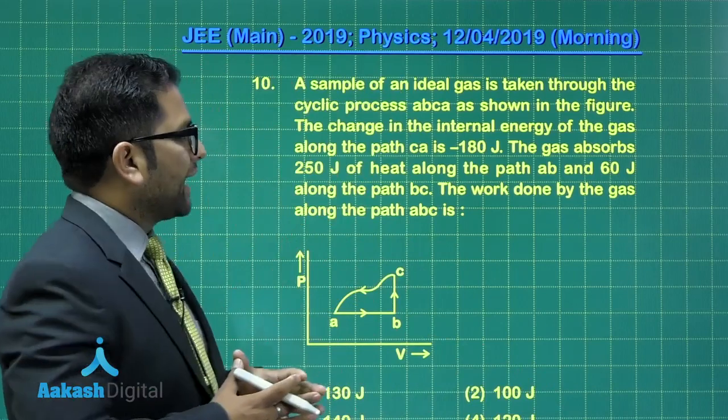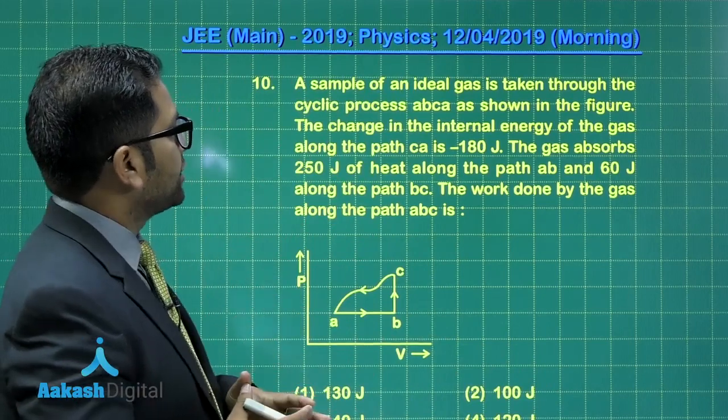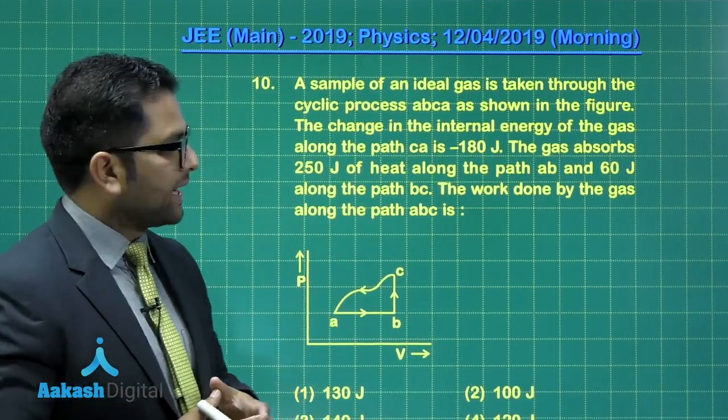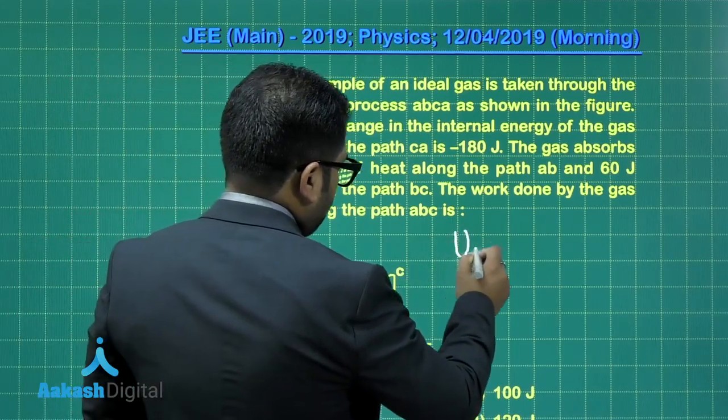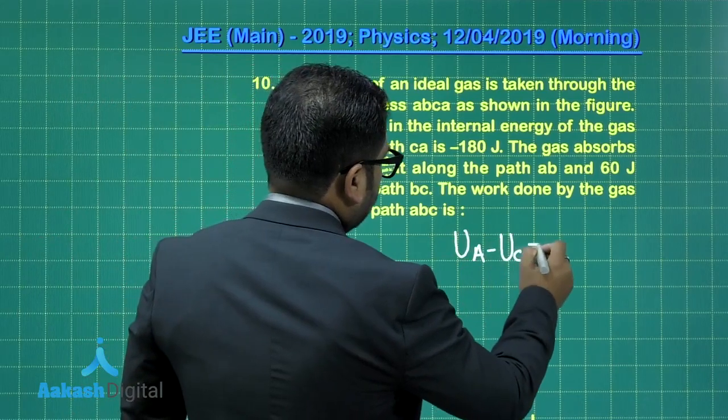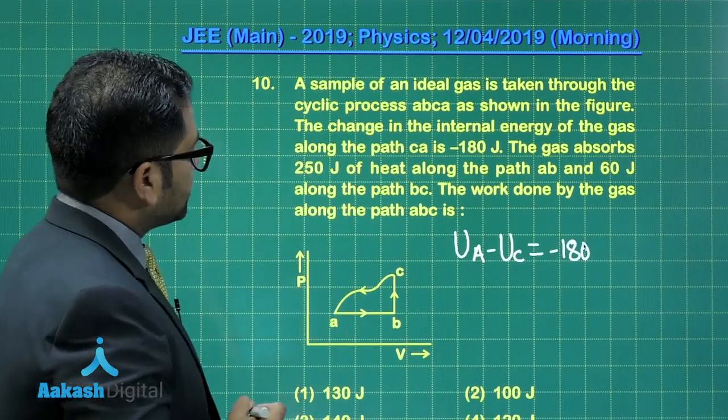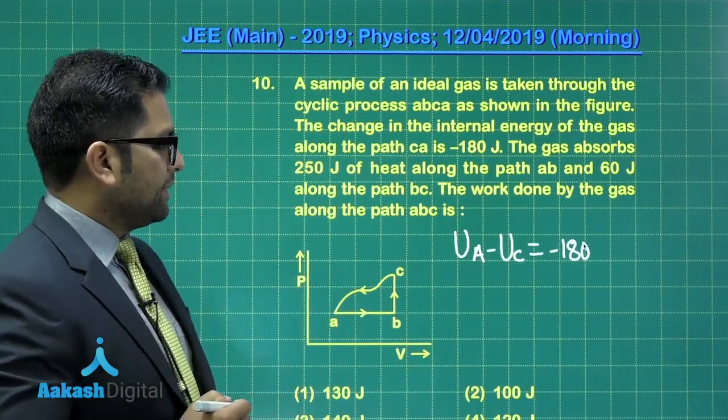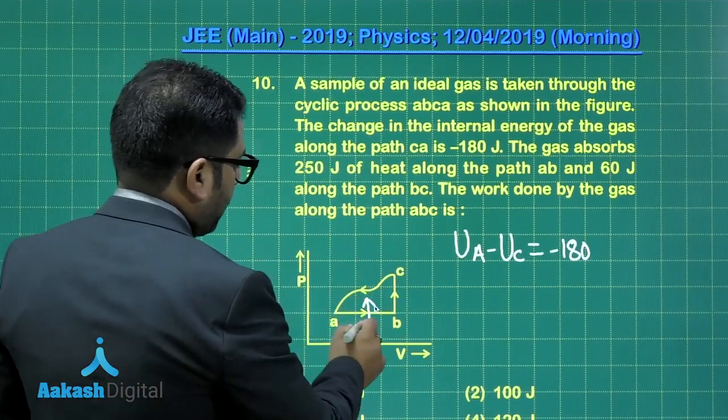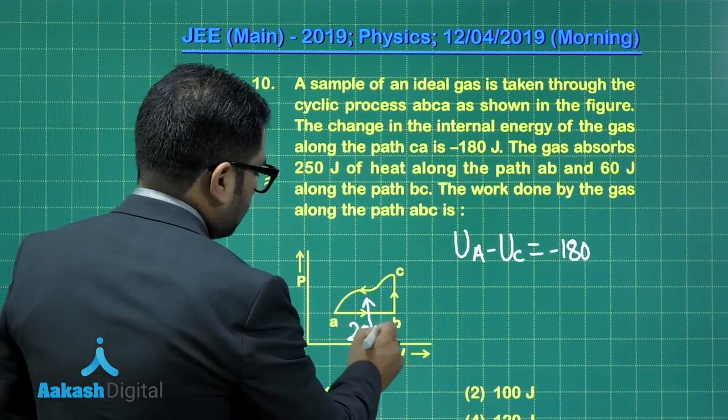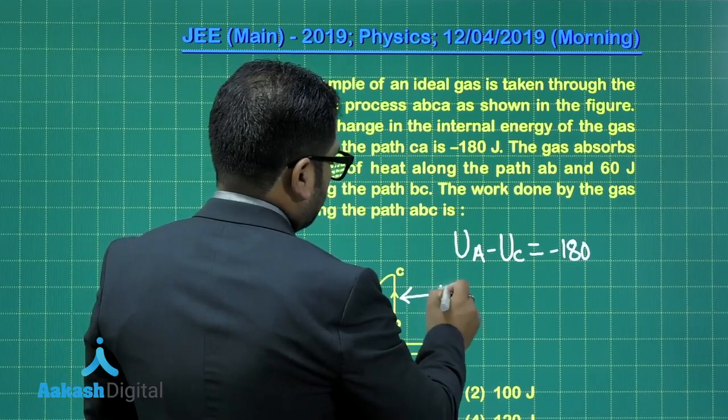A sample of an ideal gas is taken through the cyclic process ABCA. The change in internal energy of the gas along the path CA is minus 180 joule. That means UA minus UC equals minus 180 joule. The gas absorbs 250 joule of heat along the path AB, and along this path it absorbs heat 60 joule.